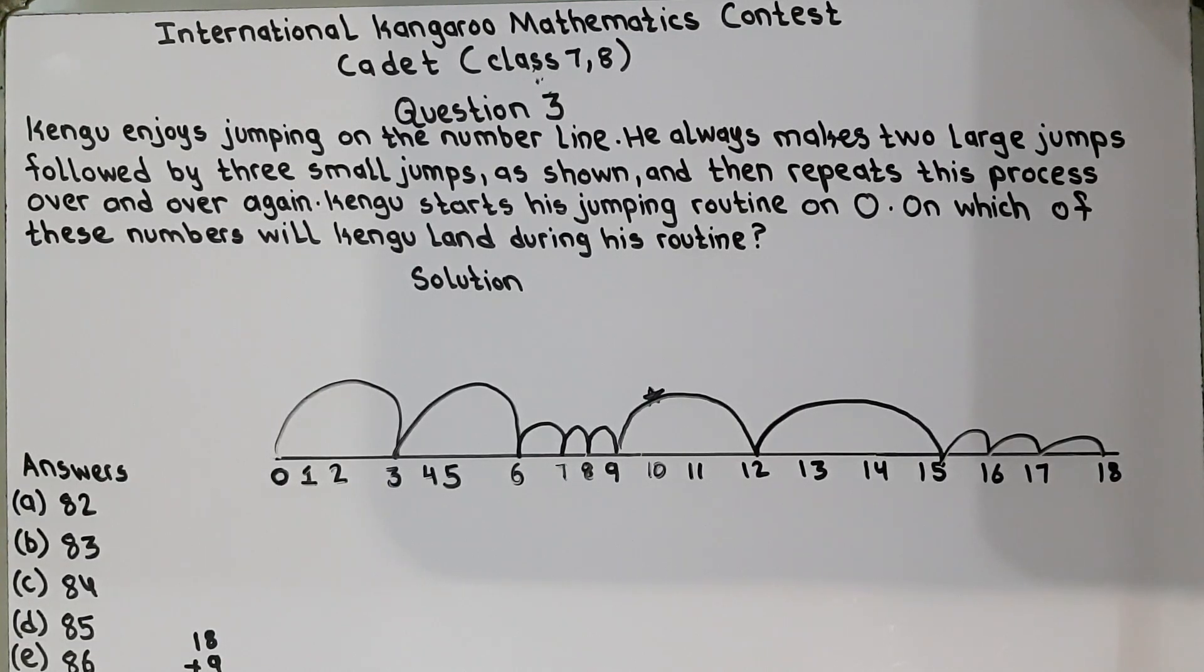45 plus 9 is equal to 54 and 54 plus 9 is equal to 63 and 63 plus 9 is equal to 72 and 72 plus 9 is equal to 81. Now on 81 we will stop.